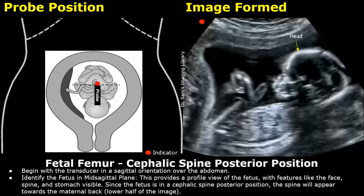We will start with the fetus in a cephalic spine posterior position. Start the scan by placing the probe in a sagittal orientation over the abdomen with the indicator towards the mother's head. If the fetus is in a cephalic position with posterior spine, the fetal head will be seen on the right side of the image, and the fetal spine will be seen in the lower half of the image. Identify the fetus in a mid-cervical plane.